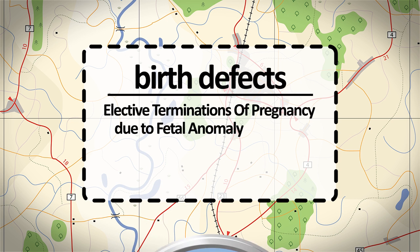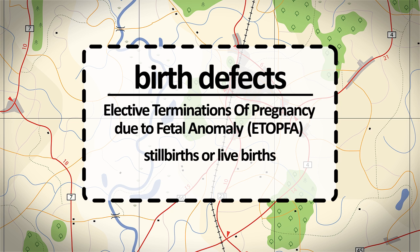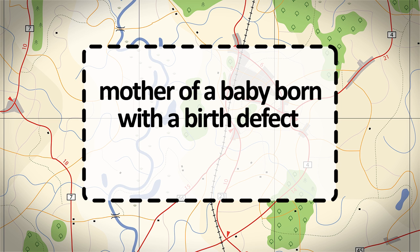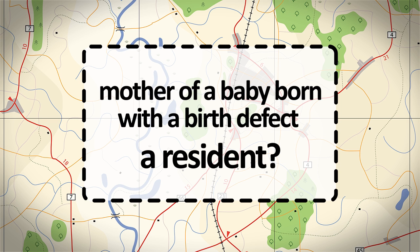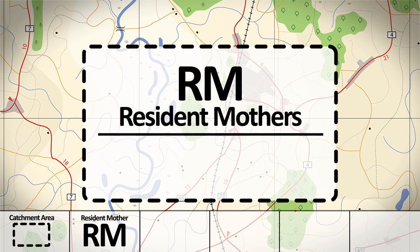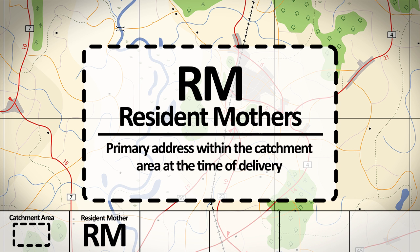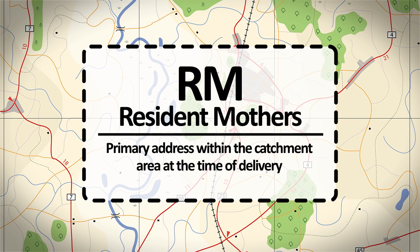These could include elective terminations of pregnancy due to fetal anomaly, stillbirths, or live births. Most programs usually include at least live births and stillbirths with birth defects. Most birth defect surveillance programs consider resident mothers as mothers whose primary address is within the catchment area at the time of delivery.